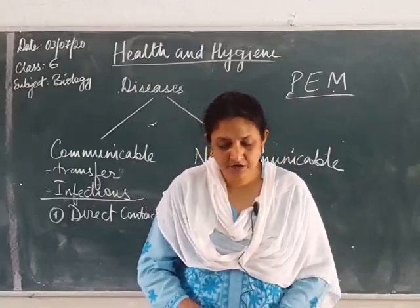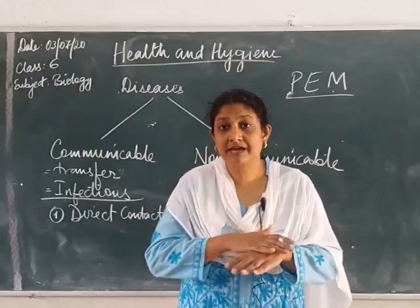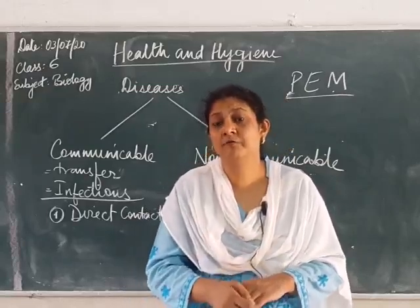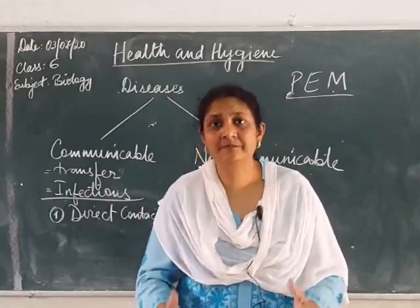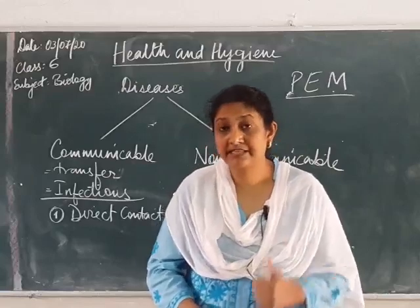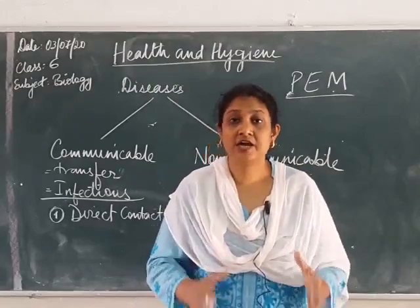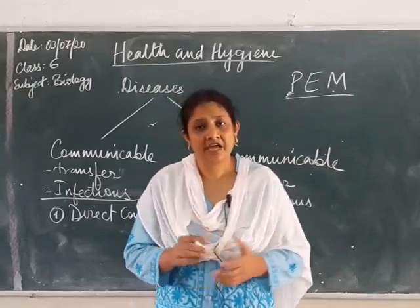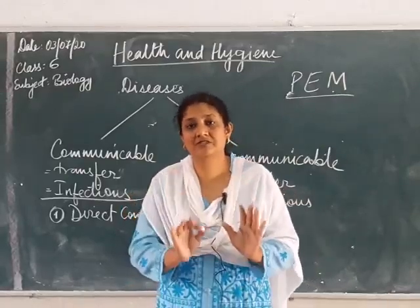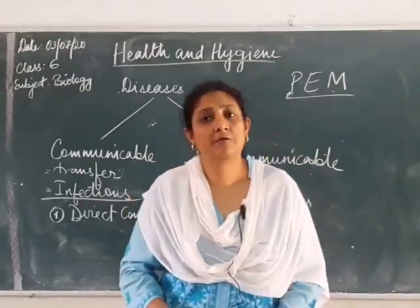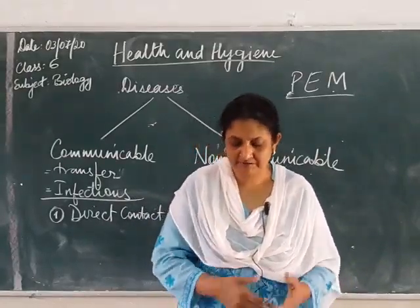The symptoms of Marasmus include poor muscle development — the ribs and bones become visible because there is almost no fat under the skin. The legs are very weak and the child is unable to stand properly. There is loss of appetite, anemia, underweight, mental retardation, and low resistance to diseases. The child falls sick often because from inside it is not properly nourished and cannot resist any kind of disease.